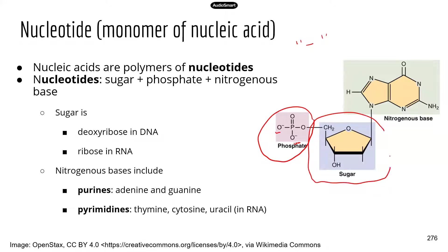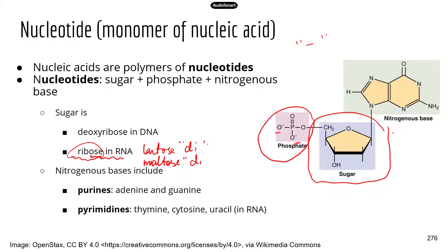The second component is the sugar in the middle. Sugars are carbohydrates — usually smaller ones. The sugar component is different between DNA and RNA. In RNA, the sugar is ribose — remember the suffix '-ose' usually indicates a sugar, like lactose, maltose, or glucose. In DNA, the sugar is deoxyribose. You can see the 'deoxy' part in DNA.